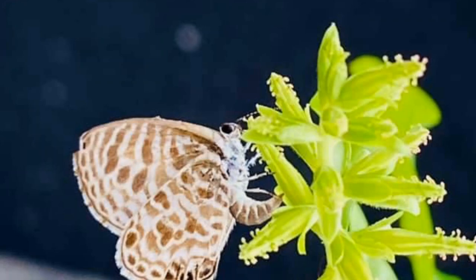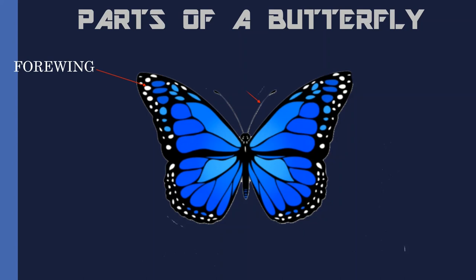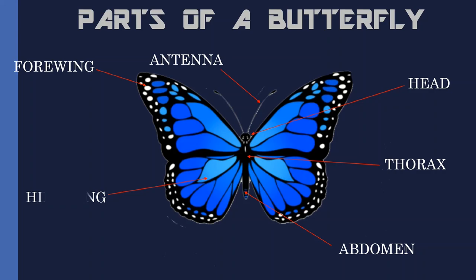Like all insects, they have six jointed legs, three body parts, a pair of antennae, compound eyes, and an exoskeleton. The three body parts are the head, thorax, and abdomen. The butterfly's body is covered by tiny sensory hairs.